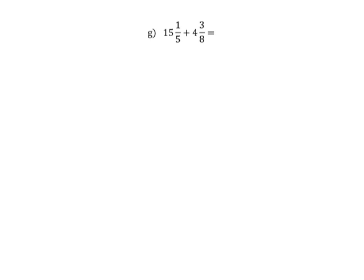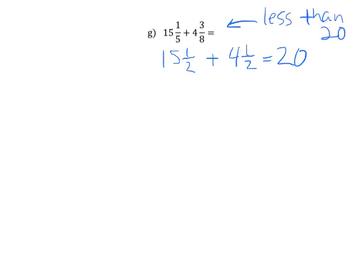Let's do one more practice. Straight up numbers. Let's do a little bit of estimation. We know that 15 and 1/5 — a couple ways to think of that — we can think of 15 and 1/5 as less than 15 and a half. And we can see that 4 and 3/8 is less than 4 and a half. So when we add those, we end up with 20. So we know our answer has to be less than 20.